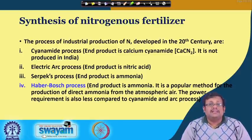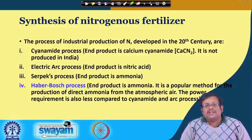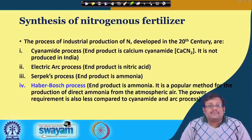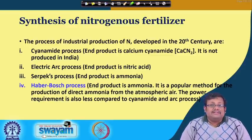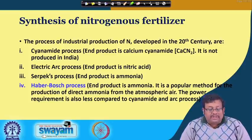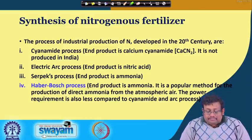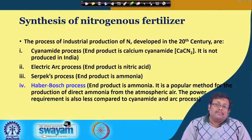Synthesis of nitrogenous fertilizers occurs through different industrial processes. The first is the cyanamide process, producing calcium cyanamide — not produced in India. The second is the electric arc process, producing nitric acid. The third is the serpex process, producing ammonia. The most common and popular is the Haber-Bosch process, which also produces ammonia. It is the popular method for producing ammonia directly from atmospheric air and requires less power compared to the cyanamide and arc processes.